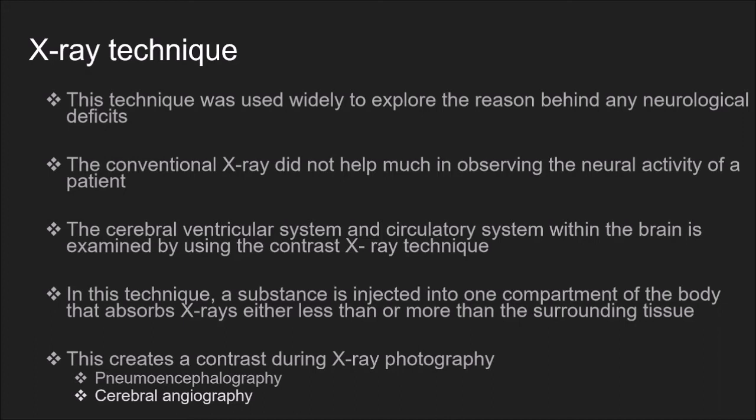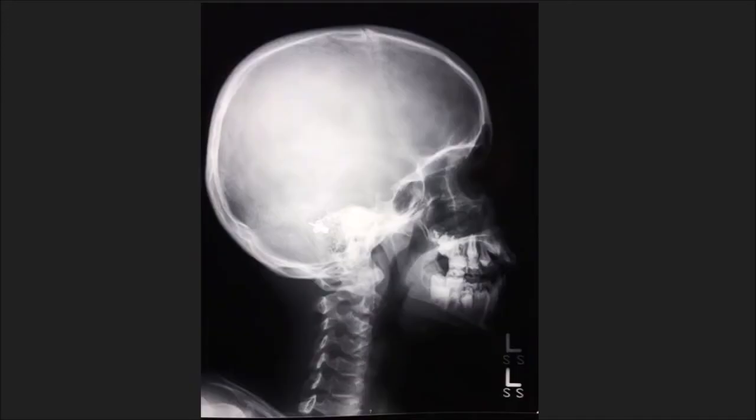Pneumoencephalography and cerebral angiography are two ways in which contrast X-rays are used. Pneumoencephalography is a very old radiographic technique to examine the brain. Cerebral angiograms are most useful for localizing vascular damage and help to detect any tumor. This is how an X-ray looks — I am sure you would have seen it before.